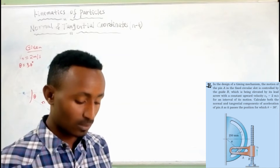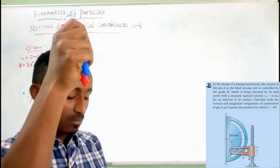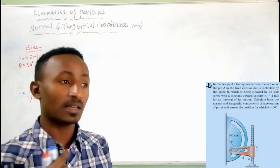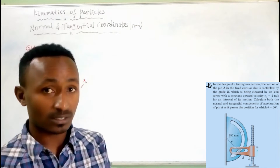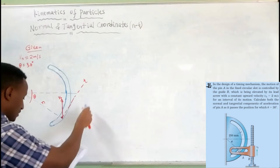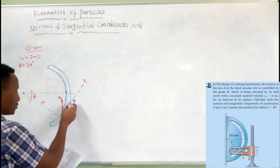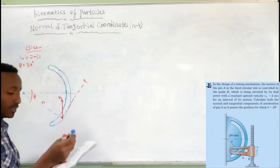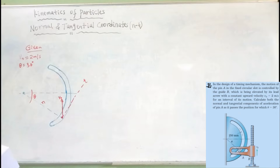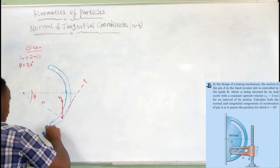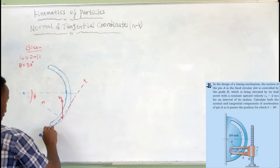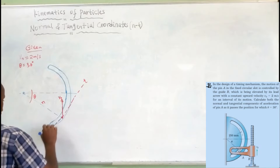This is the direction of the velocity. This means the tangential acceleration and the tangential axis acceleration. This means the direction of the tangential acceleration.